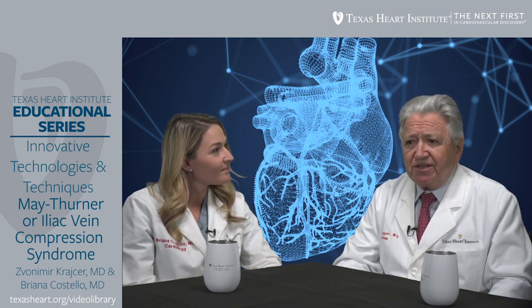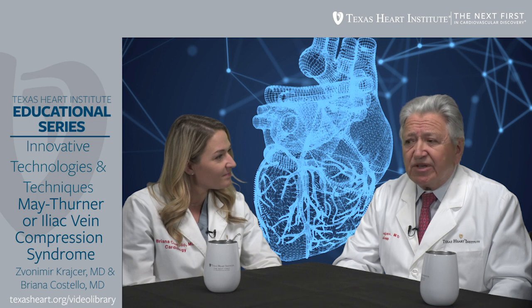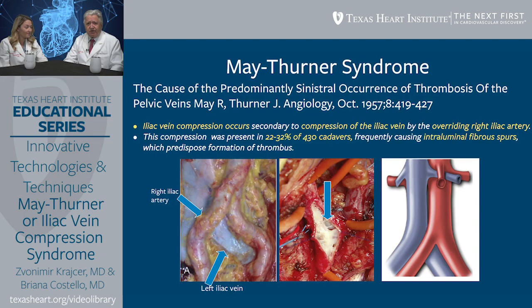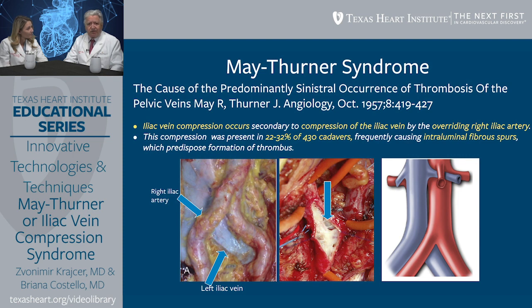This was a post-mortem analysis, and it didn't become well-known for almost a century after that. In October of 1957, two pathologists, May and Turner, described in the Journal of Angiology this particular condition, repeating the same description that was described by Werhoff. They called it iliac vein compression syndrome and identified that the right iliac artery was crossing over the left iliac vein, causing this compression syndrome.